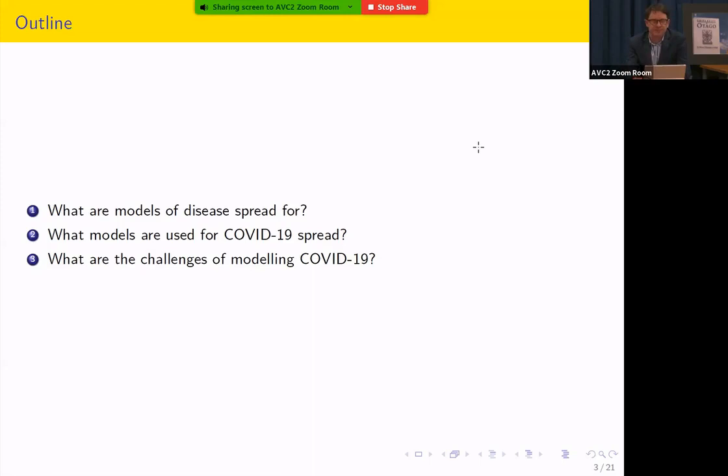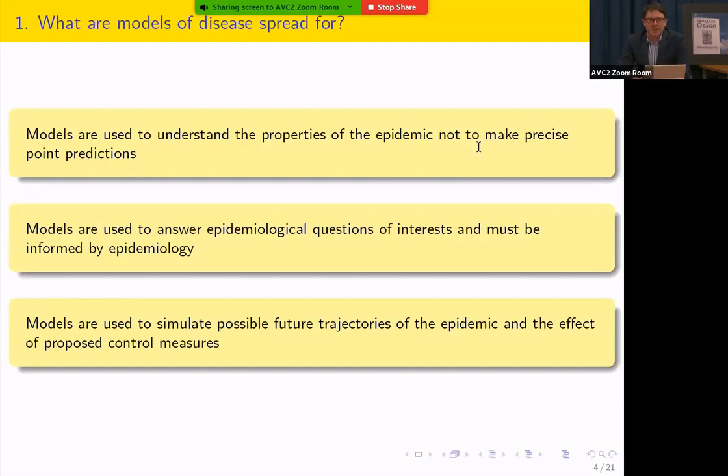So these are the three reasons we might use models for disease spread. And if you remember nothing else, I'm hoping that you'll remember these three points. And they are linked together. But the first one I want to emphasize is that models are used to understand the properties of the epidemic and not to make precise point predictions. So it's been a lot of work with people trying to predict in a month or even next week how many cases there might be, and giving some precise number. And of course, being woefully inaccurate and embarrassingly so. And it's important that that's not our job when we try to model an epidemic. We're trying to understand the properties of the epidemic. And I'll amplify that a little bit later on.